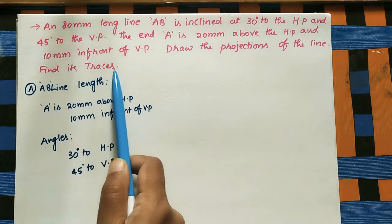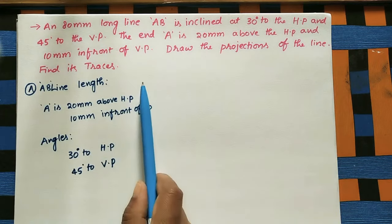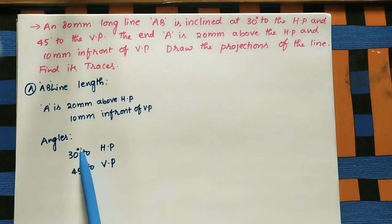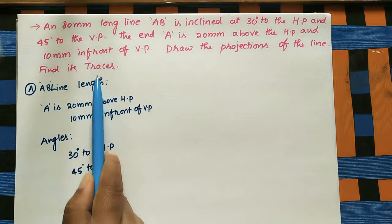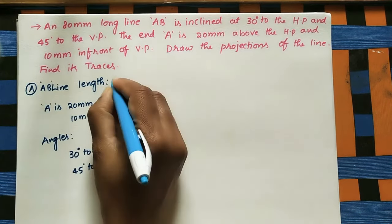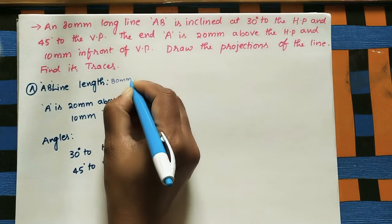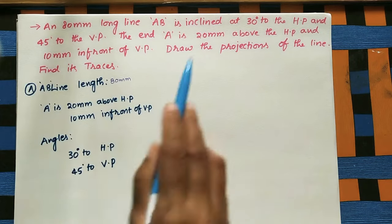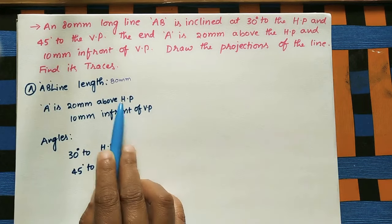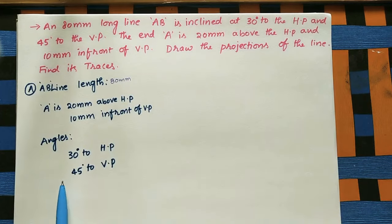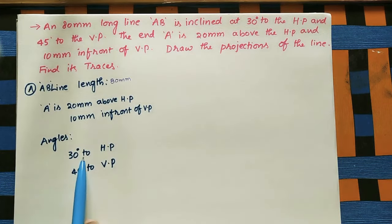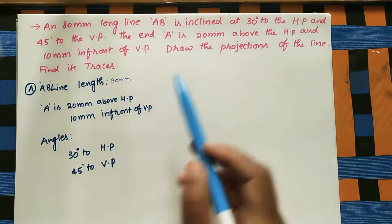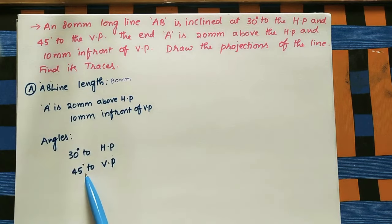First, write the given data. Line AB length is 80 mm. End A is 20 mm above HP and 10 mm in front of VP. The angles given are: line AB makes 30 degrees to the HP and 45 degrees to the VP. This is the given data.